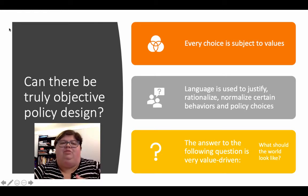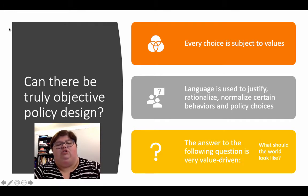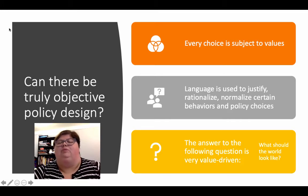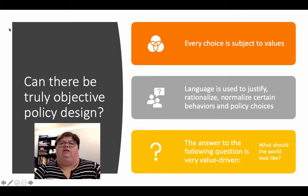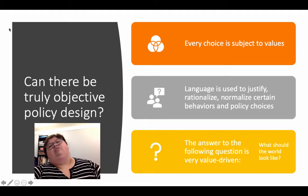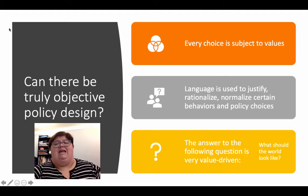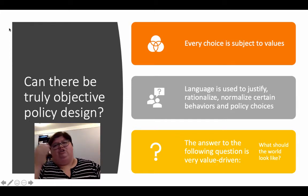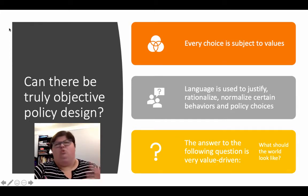What these theories of policy design focus on is this fundamental question of whether there can be a truly objective policy design. People who study using narrative policy framework and social construction say that we actually cannot make policy in an objective way. Instead we have a series of subjective choices that are made, subject to people's values at any given point in time, and language is then used to justify, rationalize, normalize, and really ingrain those values until they become behaviors and policy choices.